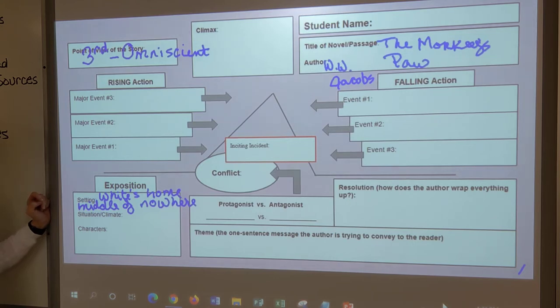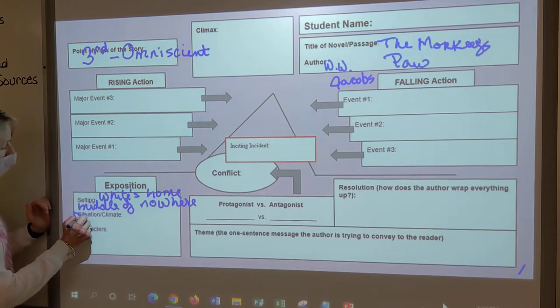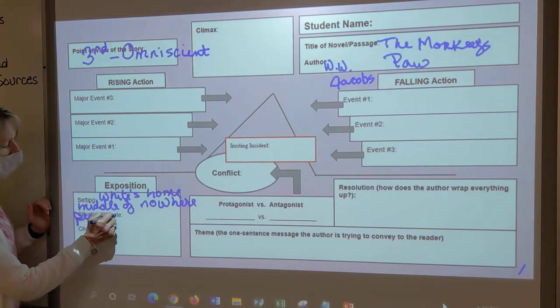What's the situation or the climate at the beginning of the story, Landon? Cold and wet. Well, when you think climate, I don't want you to think about weather. I want you to think about the people. What are they doing? The people are sitting there doing their thing peacefully. Mr. White and Herbert are playing chess while Mrs. White is knitting. So they're peacefully enjoying themselves at home. Can we say that? All right. Put that down. They're peacefully enjoying themselves at home.